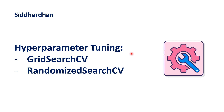In hyper-parameter tuning we have two types: grid search CV and randomized search CV. In this video, first let's try to understand what are the different types of parameters in machine learning and what is meant by hyper-parameter tuning. Finally we will discuss grid search CV and randomized search CV. This is a conceptual video, and in the next video we will move on to the hands-on part where we will implement grid search CV and randomized search CV in Python.